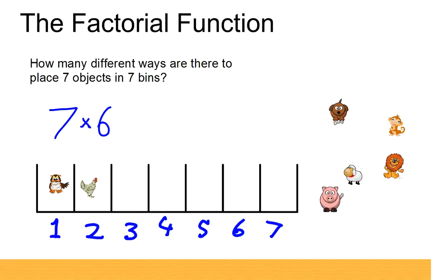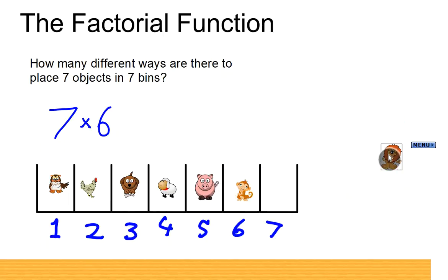Similarly we continue to put the animals in the bins going from left to right. Next we have five possibilities, then four possibilities, then three possibilities, then two possibilities, and now the only one remaining is the lion, so we have just one possibility.